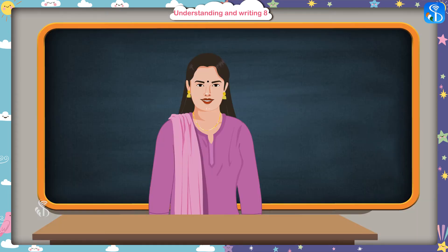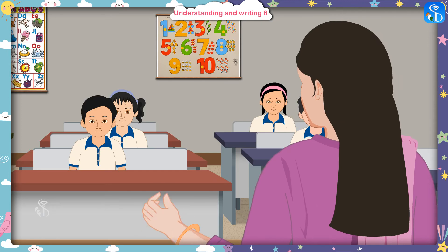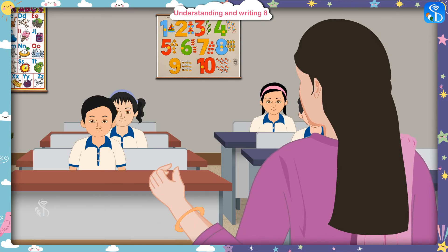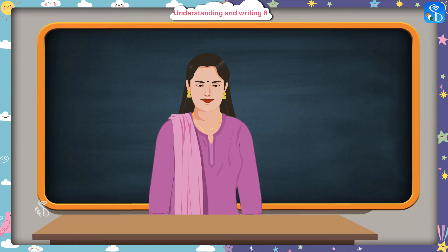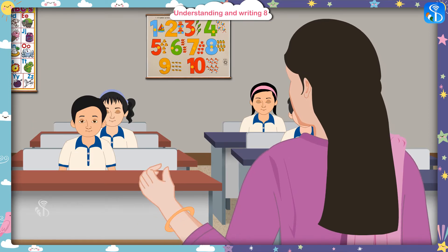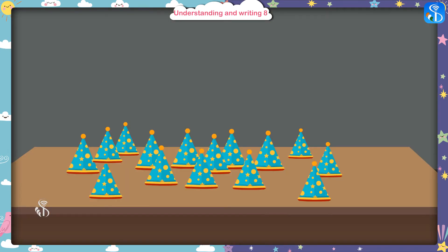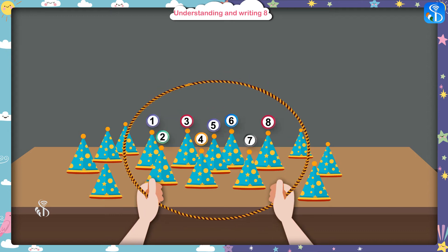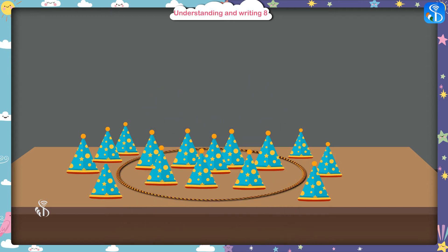Now we will have a fun activity. Should I tell you what? Yes, madam. I will be giving you a rope. You have to place this rope in such a way that there will be 8 objects in its loop. Are you ready? Yes, madam. I have kept some joker's caps here. You have to make a loop around 8 caps. Very good, Rohit. You have done it correctly.